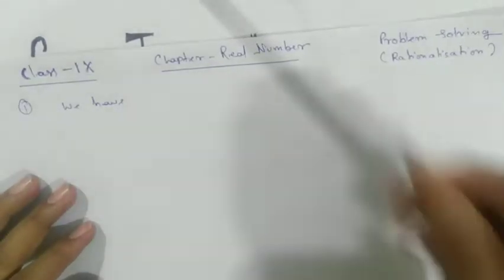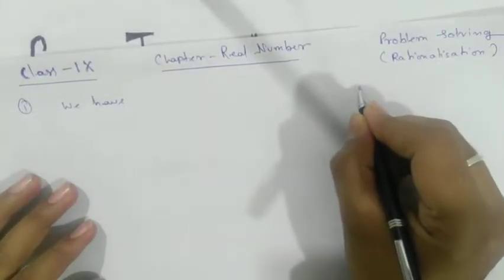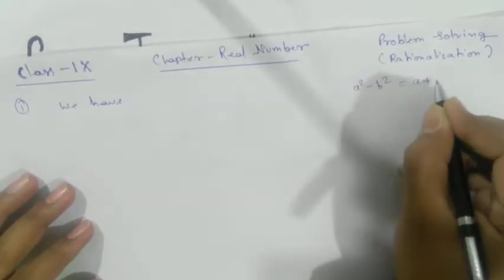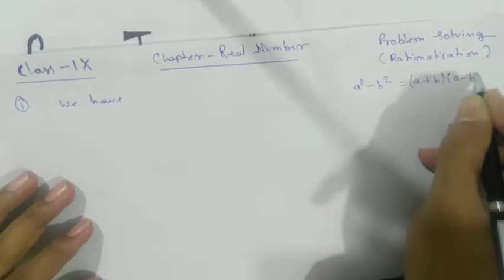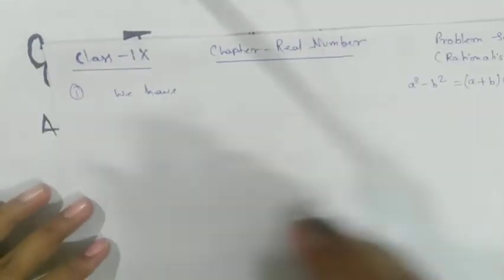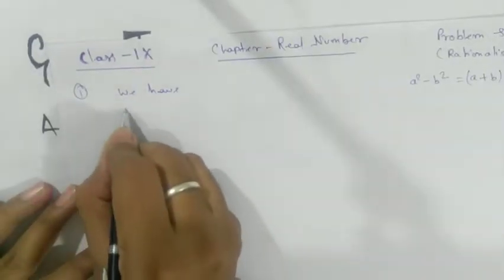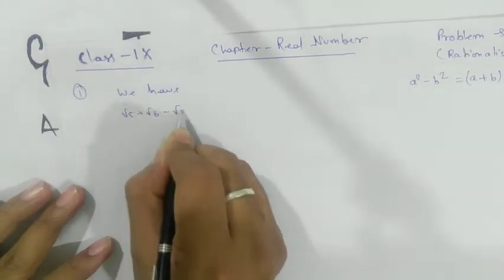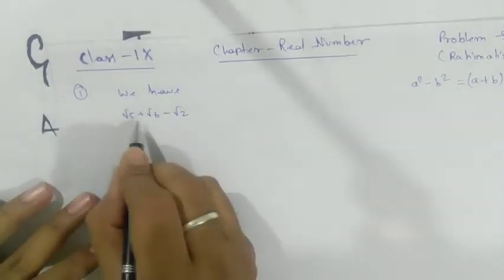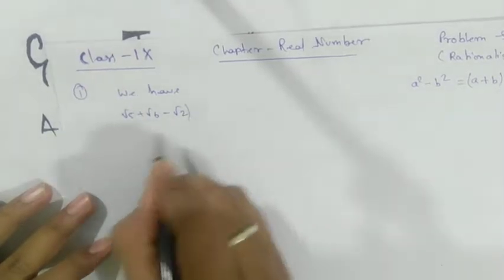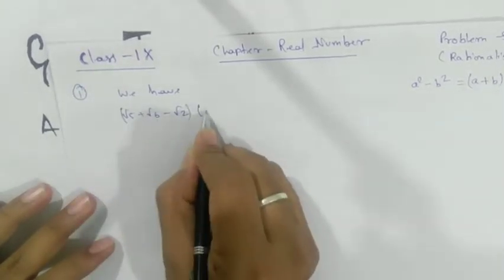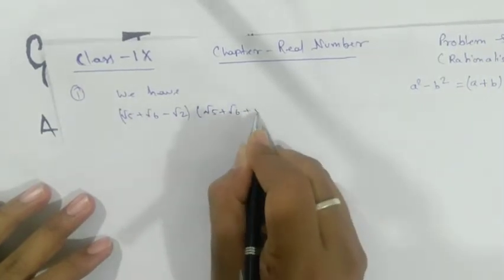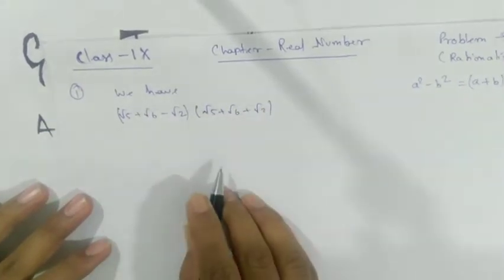Our target to rationalize uses the formula a² - b² = (a+b)(a-b). Right now you have √5 + √6 - √2. Take (√5 + √6) as your a and √2 as your b, so you need to multiply by (a + b) form to apply the identity.